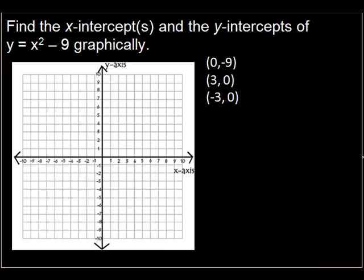Let's graph these by hand — this should be a review. The point (0, -9) is way down on the y-axis. Then we have (3, 0) and (-3, 0) on the x-axis, forming a parabola. Notice that any time I draw a graph, I always put arrows at the ends, because it goes on to infinity. I'm really picky about that, and other instructors are too, so it's a good habit to get into.